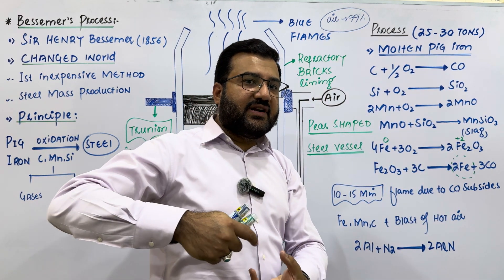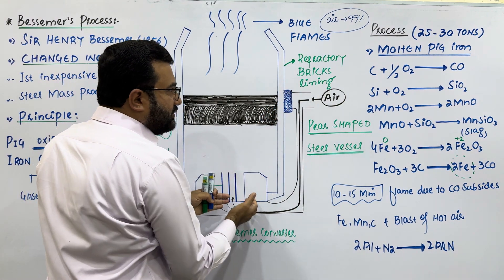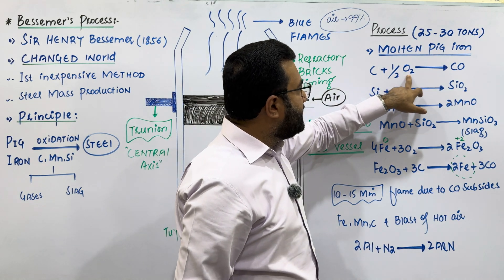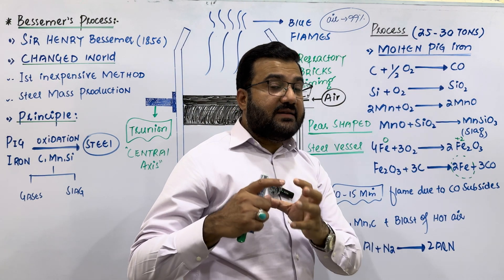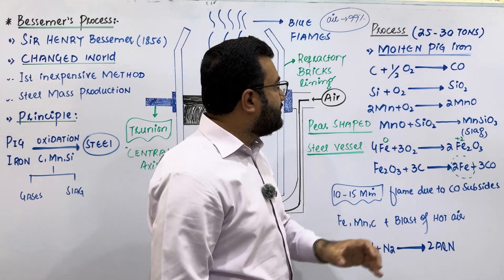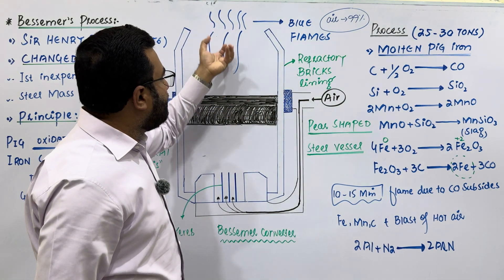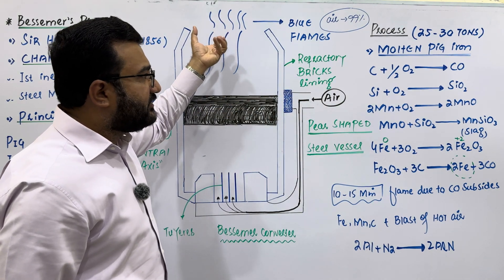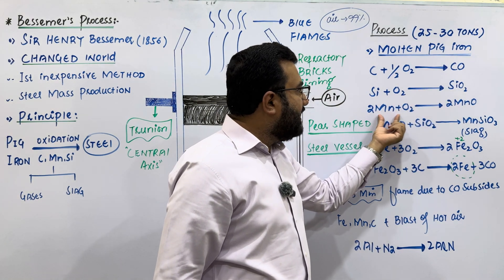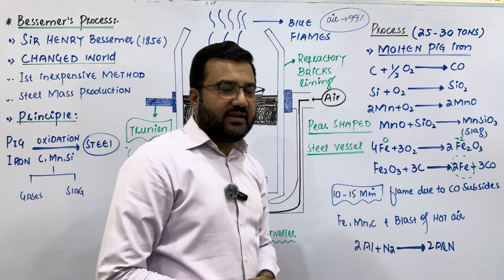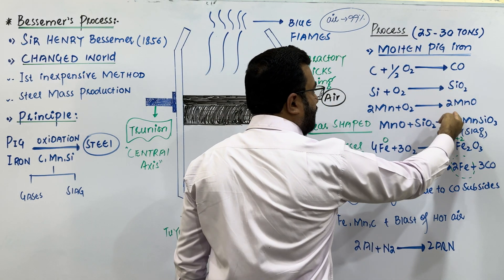25 to 30 tons of molten pig iron from the blast furnace are introduced into the Bessemer converter, and air is introduced. The oxygen present in the air helps in the oxidation of impurities: carbon is changed to carbon monoxide, and the blue flames of carbon monoxide are produced at the mouth of the converter. Then silicon is oxidized to silica, and manganese is oxidized to manganese oxide.